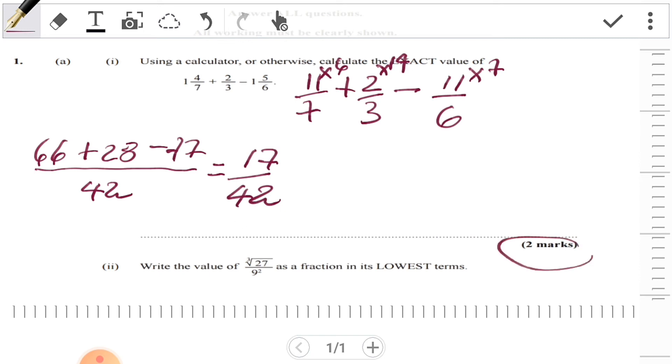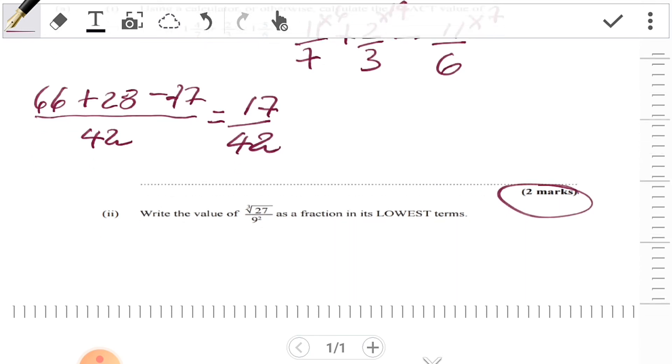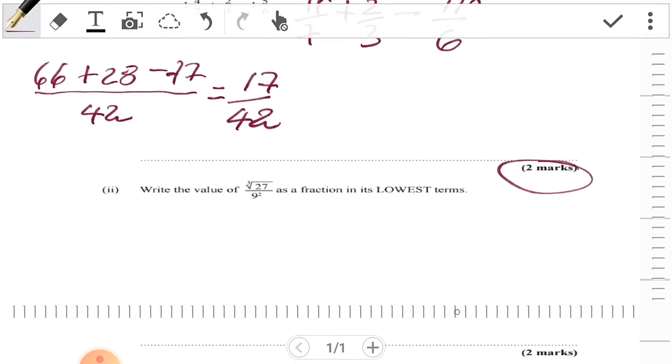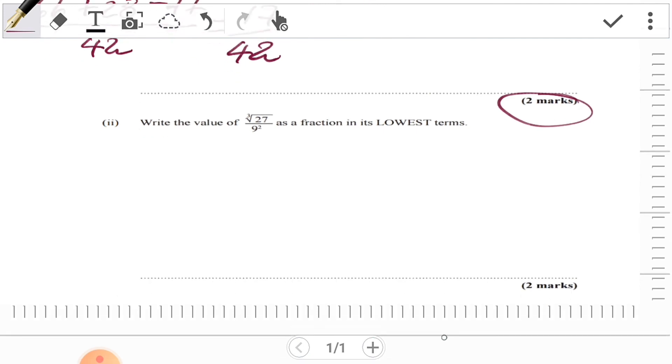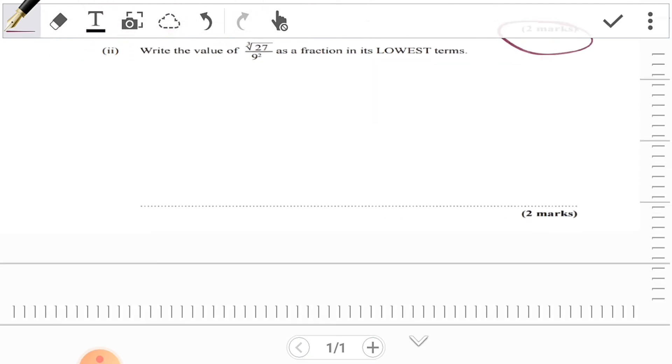Let's look at the next question that followed. It says: write the value of the cube root of 27 over 9² as a fraction in its lowest terms.